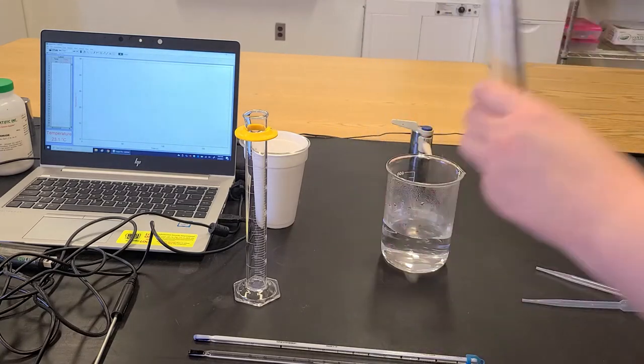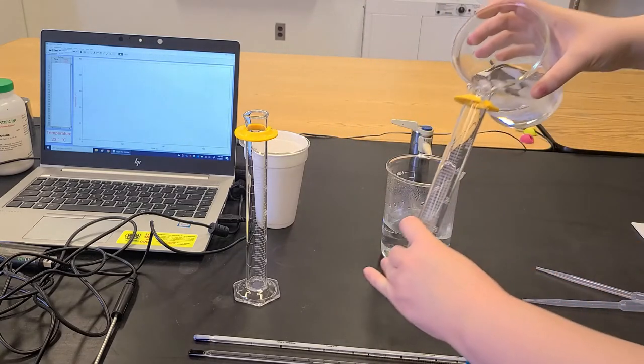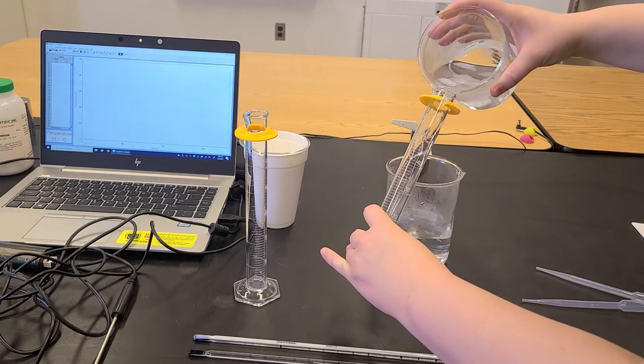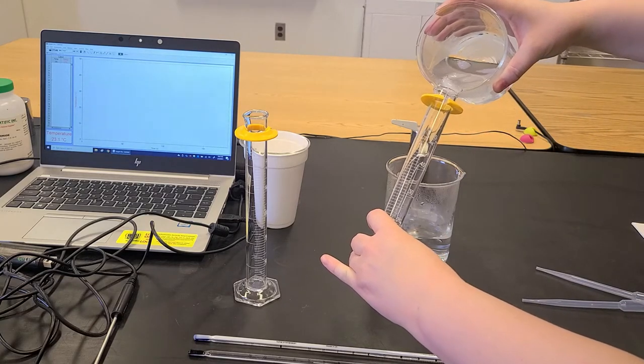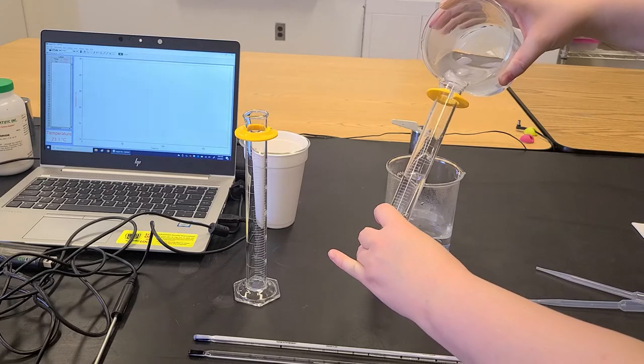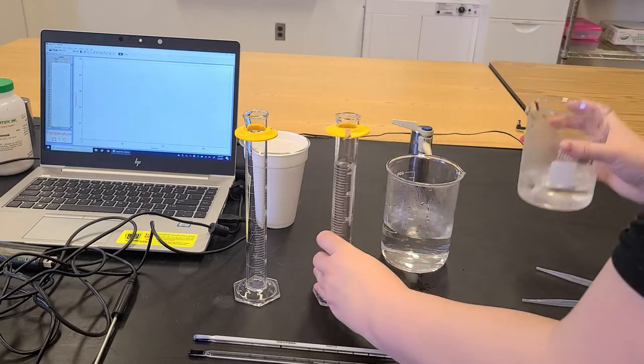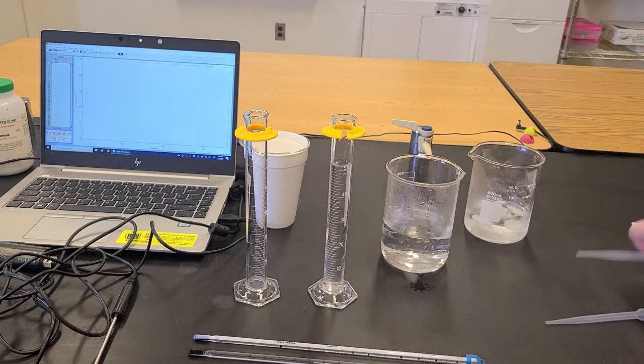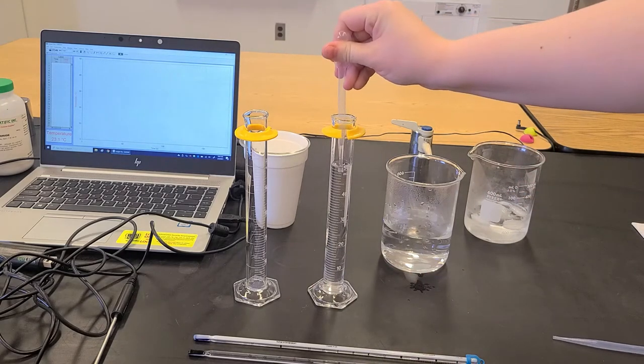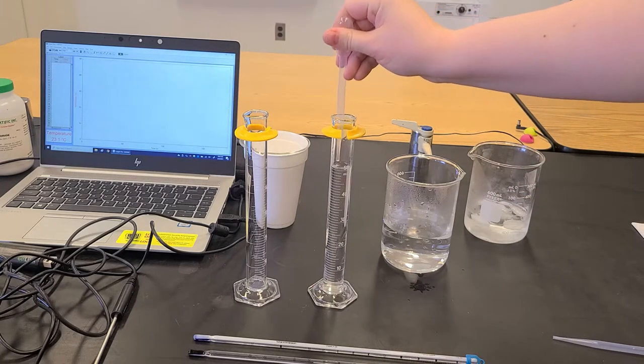So I'm going to begin by measuring out 100 milliliters of cold water and the density of water is 1 gram per milliliter so I have 100 grams of my cold water. I'm just going to adjust my volume here so that the bottom of my meniscus is resting on the 100 milliliter mark.